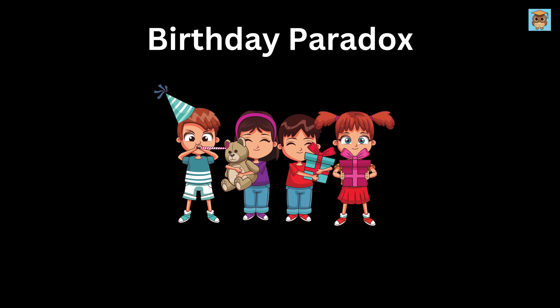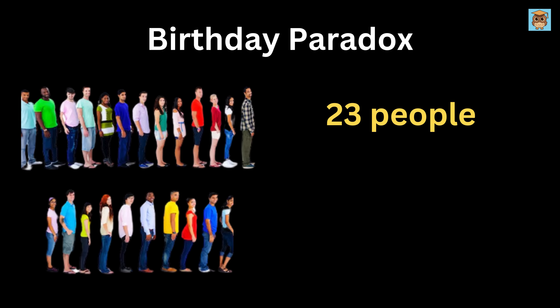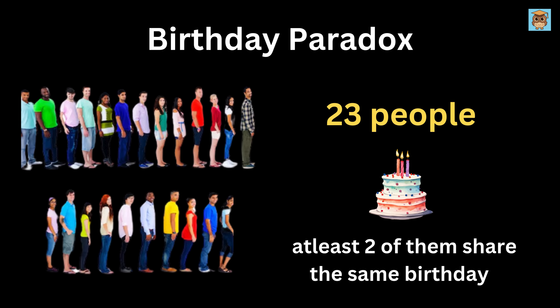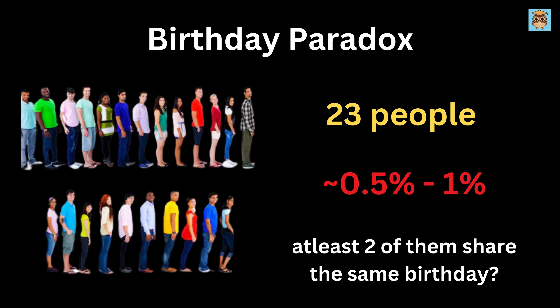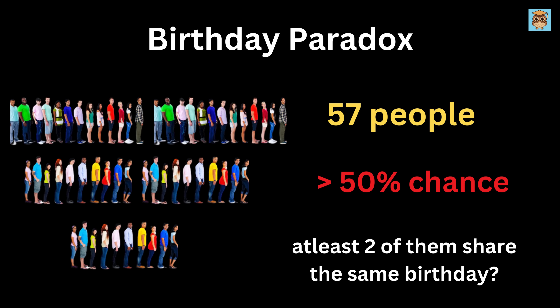Next up, we have the birthday paradox. You are in a room with 23 people. What is the chance that at least 2 of them share the same birthday? These are random people, and no twins or anything like that. Most people guess it is very low, because there are 365 possible birthdays. But you will be shocked to know that there is a more than 50% chance that at least 2 of them share the same birthday. And if you increase the number of people to 57, then there is around a 99% chance that at least 2 of them share the same birthday.